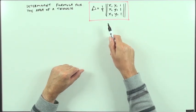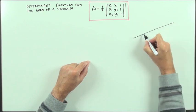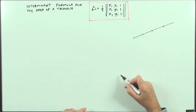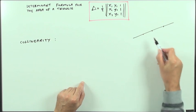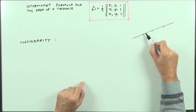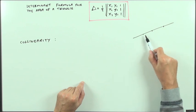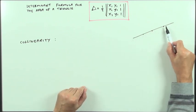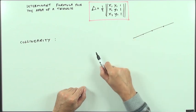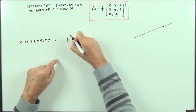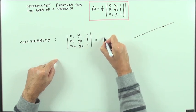Here again is the determinant formula for the area of a triangle given three points. There's something else you can do with this: if those three points actually lie on a line — if they are collinear — then this can be used as a test for collinearity. Since three collinear points form a degenerate triangle with no area, the determinant formula for the area should come to zero. So a test for collinearity is simply: the determinant with rows (x1, y1, 1), (x2, y2, 1), (x3, y3, 1) equals zero.